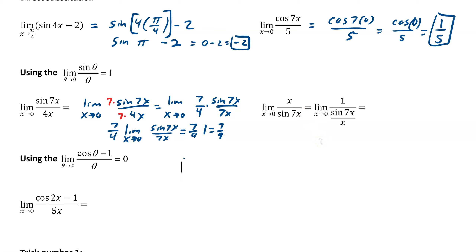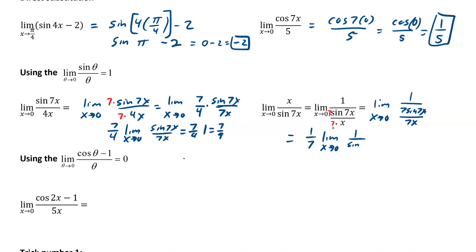Well, what if it's upside down? It's the same exact thing — we do a reciprocal so that it becomes a denominator. If you flip this, remember if you're dividing it's just the fraction being flipped. So now we can place a 7 here and a 7 there, and we end up with the limit as x approaches 0 of 1 over 7 times sine 7x over 7x. That's just 1 seventh times the limit as x approaches 0 of sine of 7x over 7x, which goes to 1. So we end up with 1 seventh times 1 over 1, which is still 1 seventh.